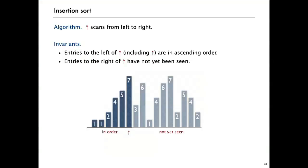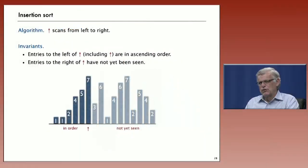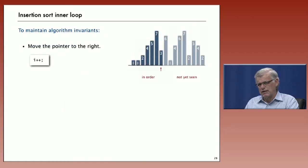Again, we can look at insertion sort in terms of invariants. Our pointer still scans from left to right, but now the elements to the left of the pointer, including it, are in order, but the elements to the right have not yet been seen at all. So we have to look at the code that's going to maintain that invariant as the pointer increments.